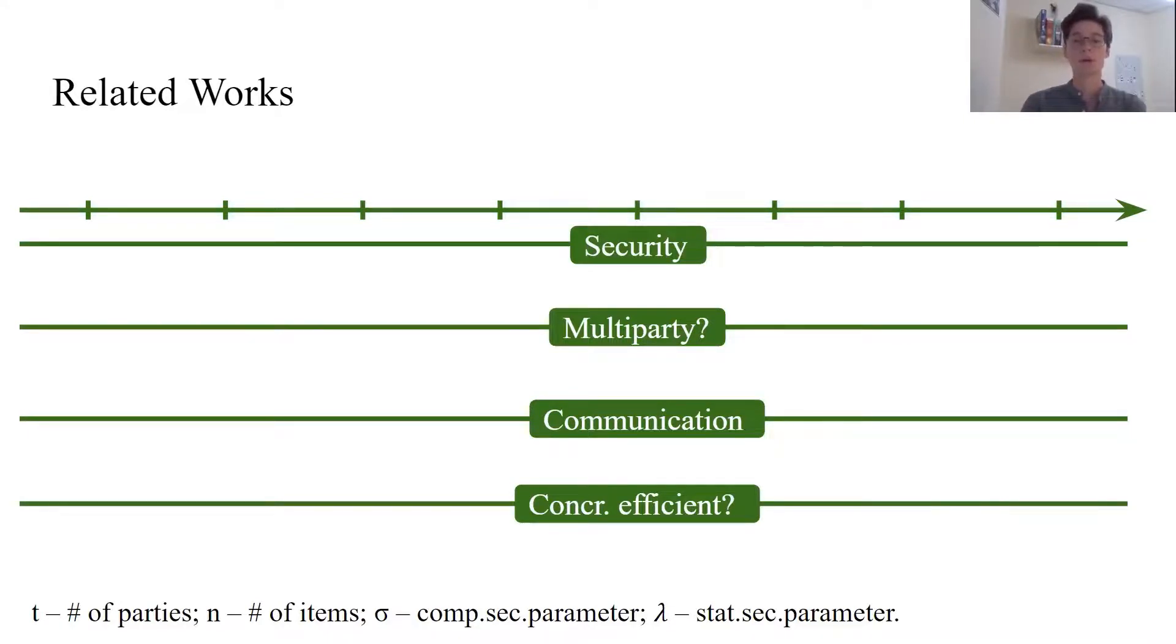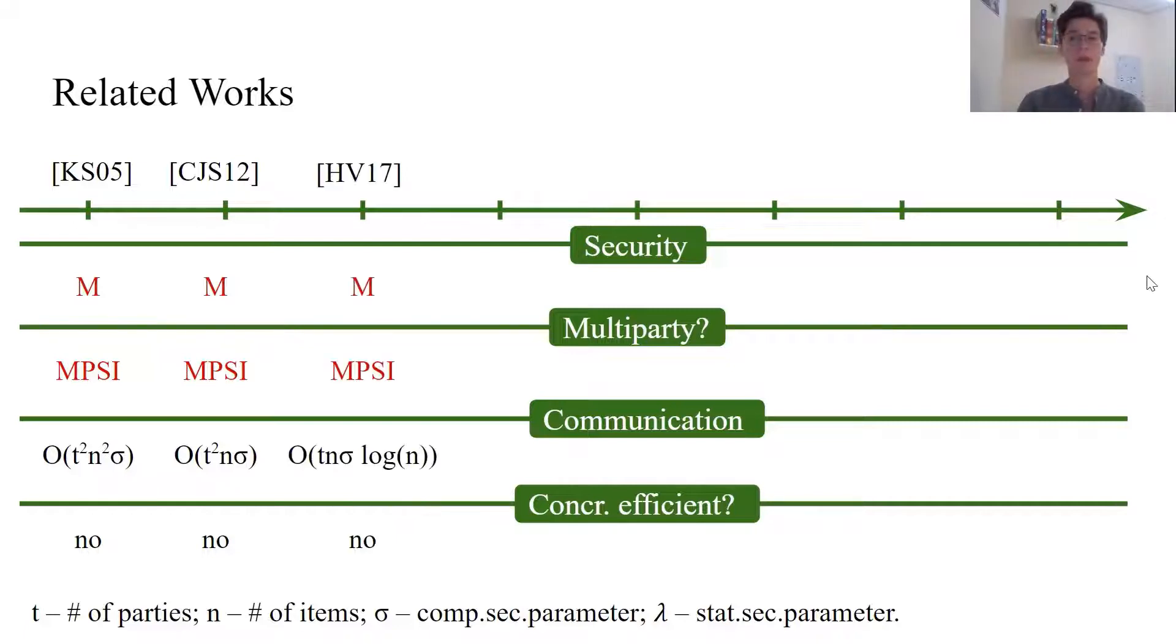There was great progress on two-party PSI. There are many secure and efficient protocols. Let's look at the multiparty malicious landscape before our project. One of the first maliciously secure MPSI protocols appeared in 2005 in the work of Kissner and so on. It has a nice asymptotic communication complexity, but is computationally heavy and was never implemented. Cheon, Jarecki and so on 2012 had better asymptotic communication, but still impractical due to the heavy building blocks, such as homomorphic encryption, zero-knowledge proofs, etc. Hazay and Venkitasubramaniam 2017 built a malicious MPSI, which is also not computationally efficient due to the quadratic number of exponentiations.